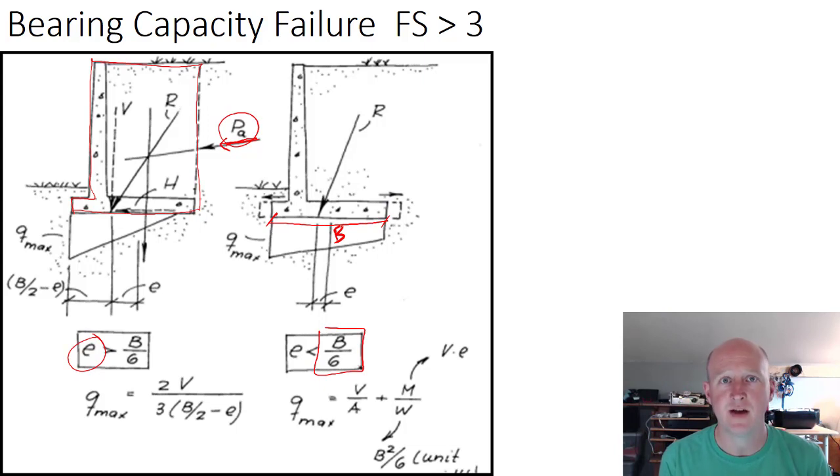As long as that happens, the resultant lands within the middle one-third and we can use that eccentricity value to calculate the maximum and minimum pressures at the toe of the wall. We'll probably need to use VESIC for this because there's a shear force that's driving the wall towards the location of the failure.